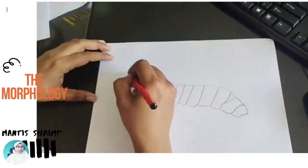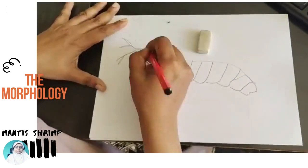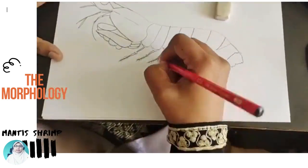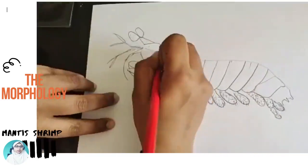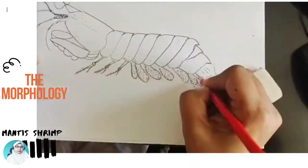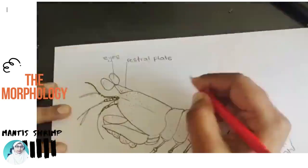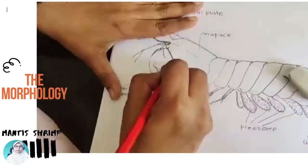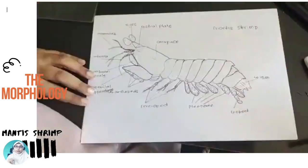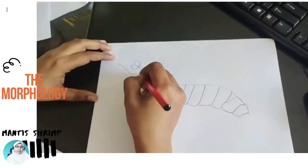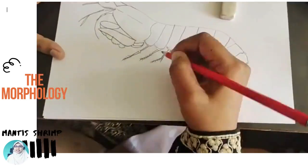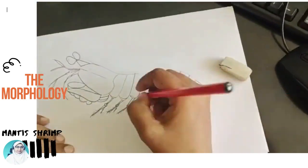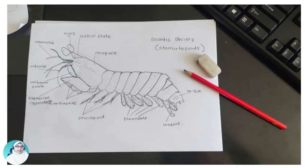Let's look at the drawing process. This is the morphological drawing of mantis shrimp. It started with simple structures and then goes into the details. You can use some dotted lines to emphasize certain structures. Then remember to label it correctly. Use clear handwriting to show the label — the name of the label — and remember to add the title at the end of the drawing. Here are the structures of the stomatopods.